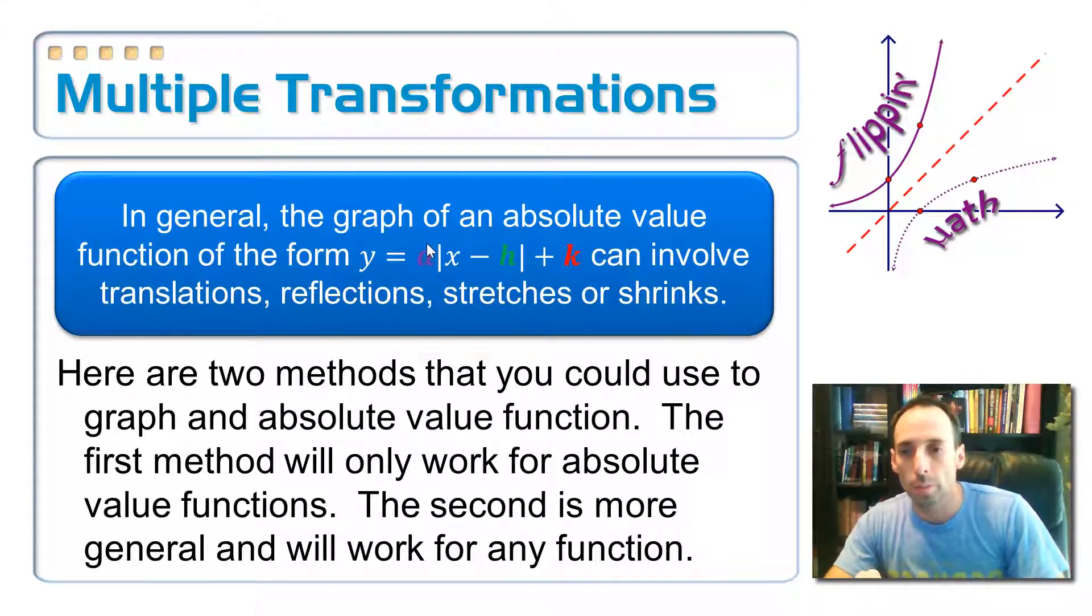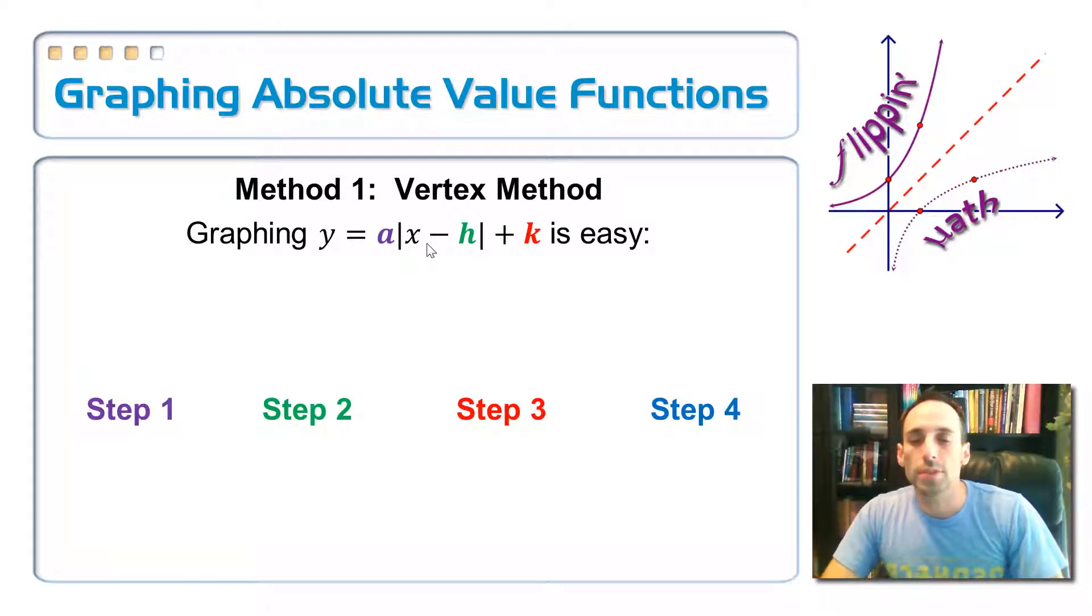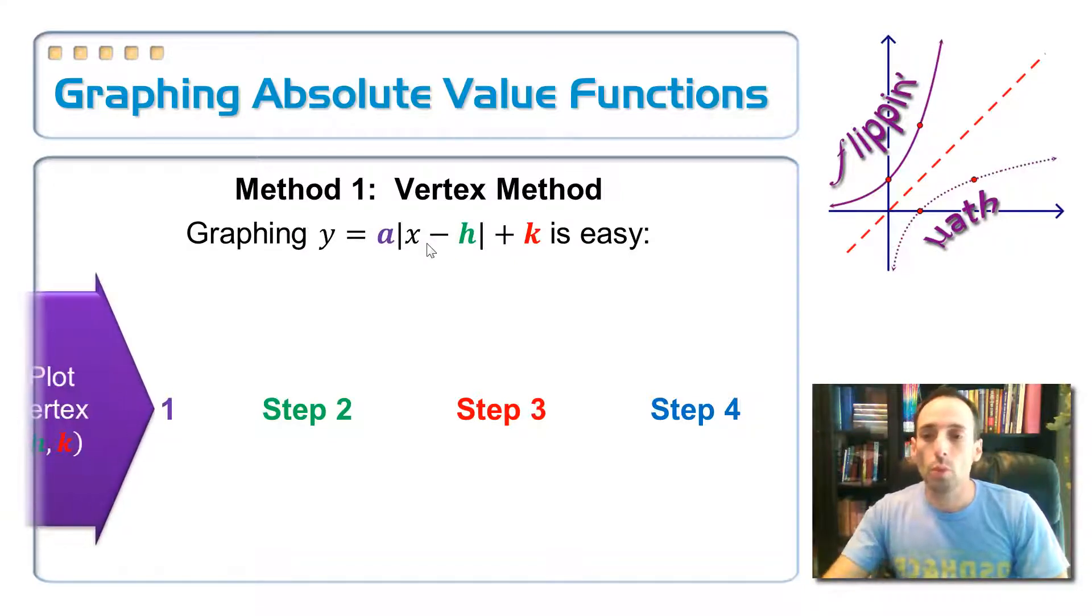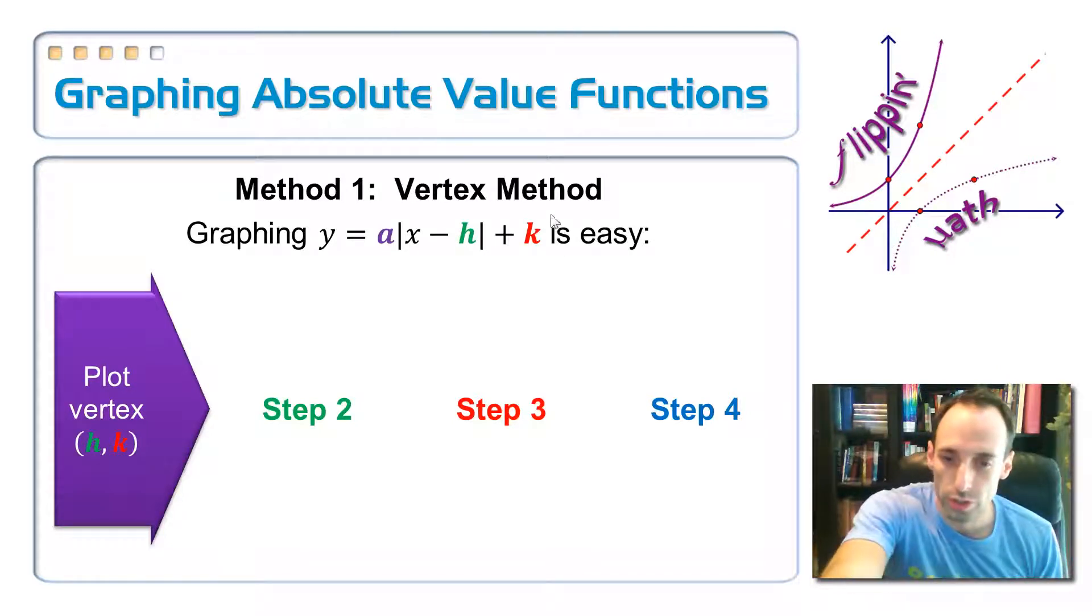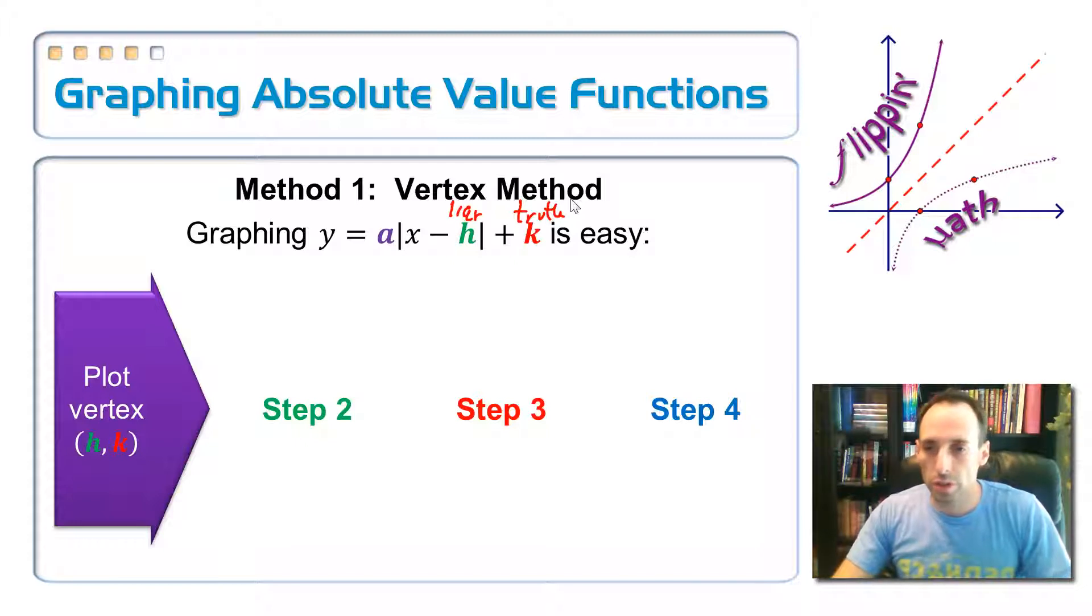Let's say I have the equation y equals a times the absolute value of x minus h plus k. The a, the h, and the k, they're just numbers, whatever the numbers are given to us in the problem. I'm going to call this one the vertex method. Step number one, I'm going to plot that vertex h and k. Just remember, of course, the h here is going to lie to you. This is a liar, but the k there is going to tell the truth as to what the sign is and what direction it goes. So the hk gives us our vertex. Plot that as a point.